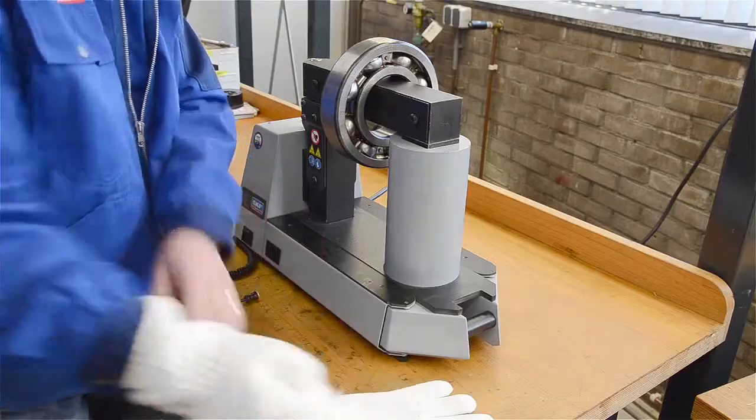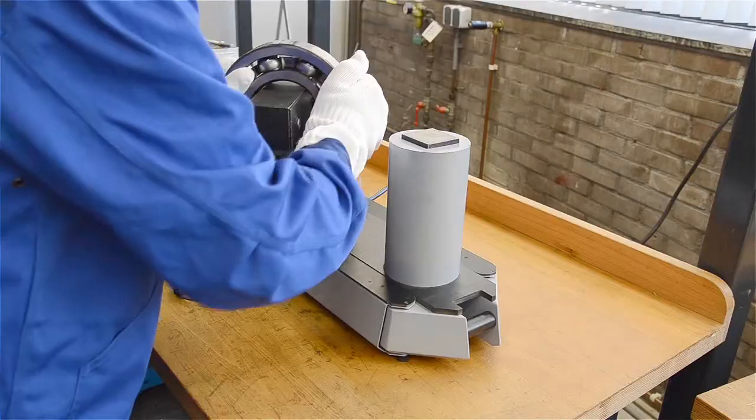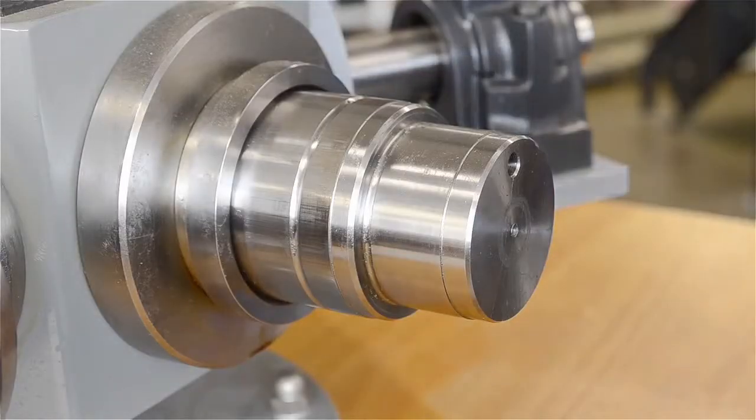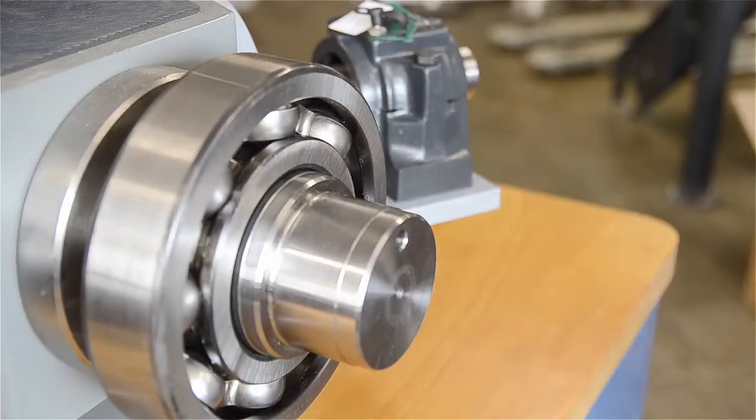Wearing SKF heat-resistant gloves, remove the bearing from the heater and place it on the shaft. As the bearing cools, a strong interference fit results.